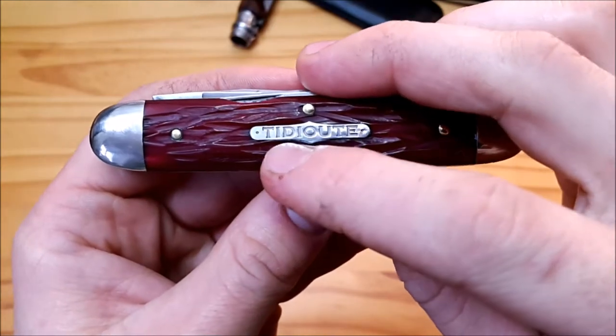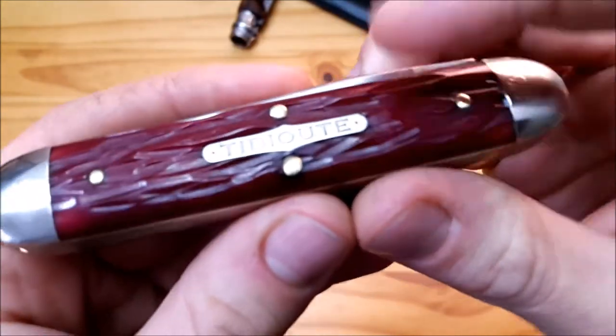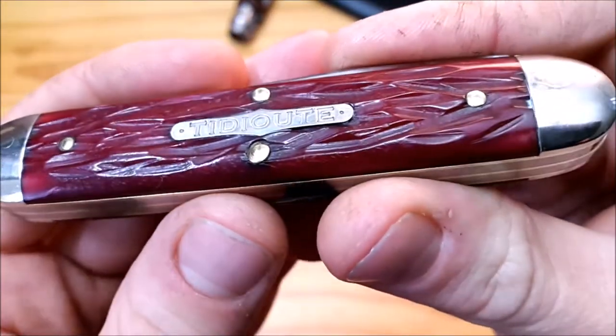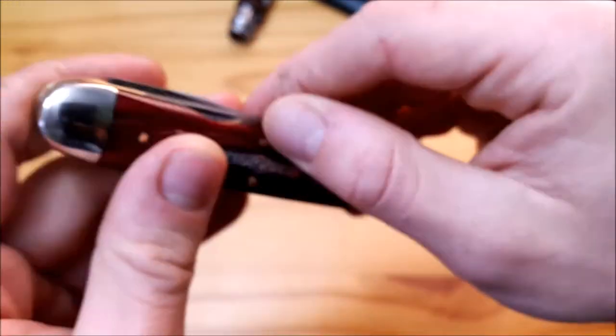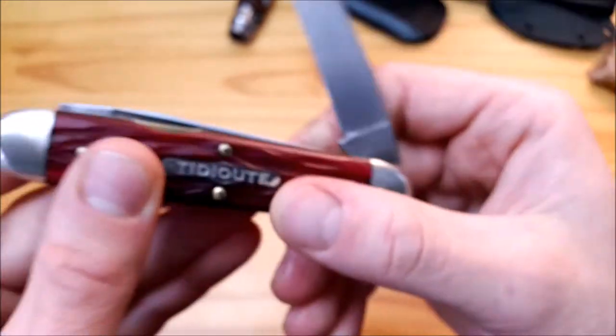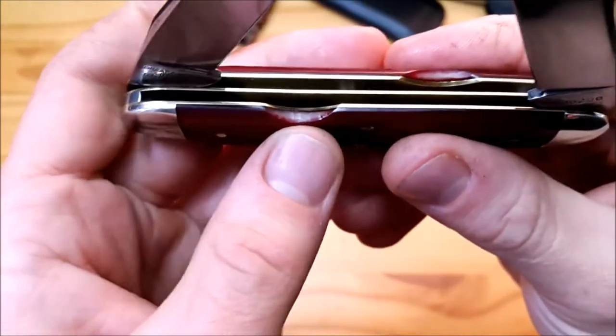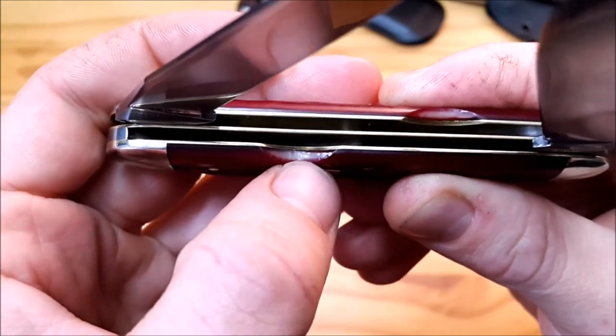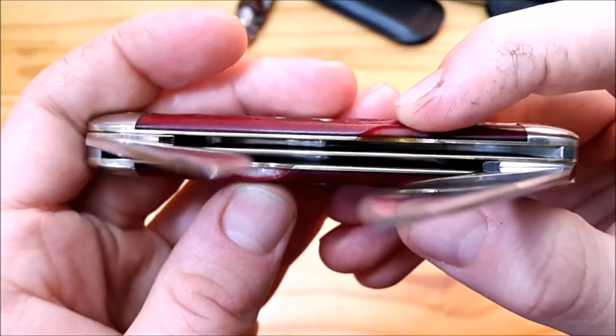The pinned-in shield is absolutely flawlessly executed. There are no gaps, nothing to be seen here. You have two easy open notches to access the nail nicks of the blades. This is also pretty cool because here you can see how deep the color goes into the bone when they dye it, about a millimeter or something, and under it it's actually white, as bone is supposed to be.